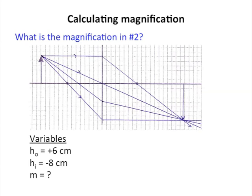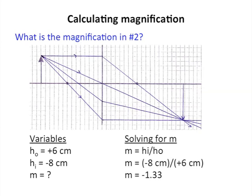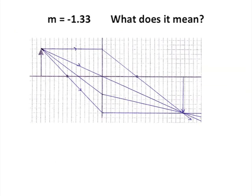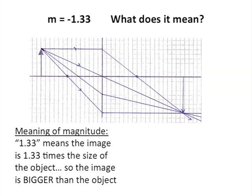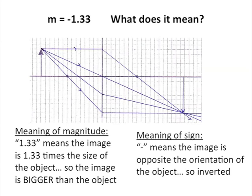Another example: what is the magnification in number 2? Go ahead and pause the video and calculate the magnification. Solving for M, we find a magnification of negative 1.33. The magnitude 1.33 means the image is 1.33 times the size of the object, so the image is bigger than the object. The negative means the image is opposite the orientation of the object, so it's inverted.